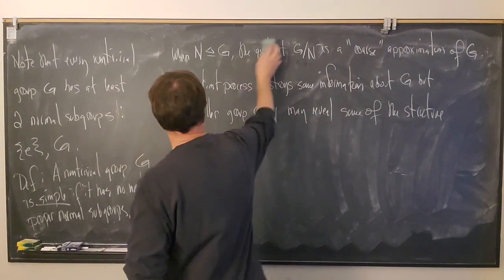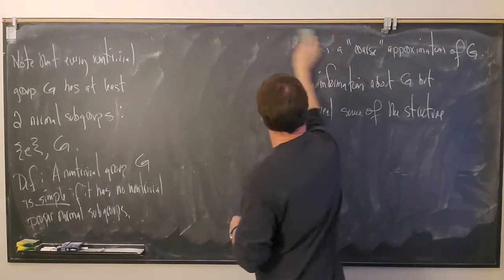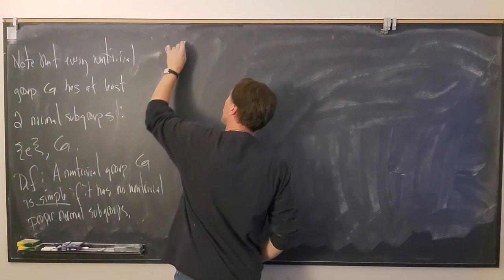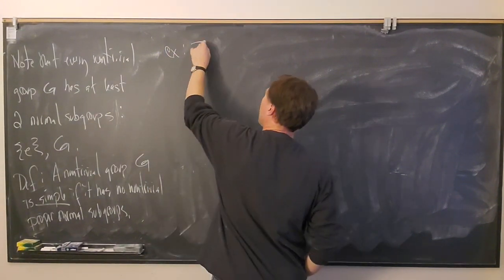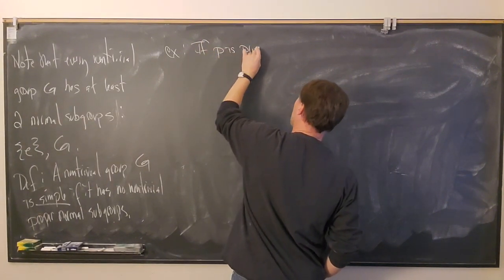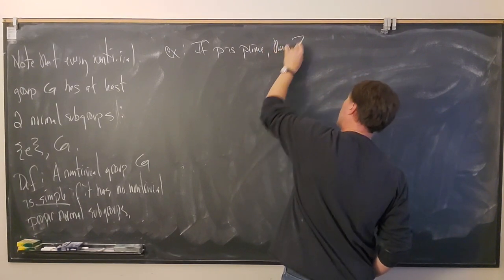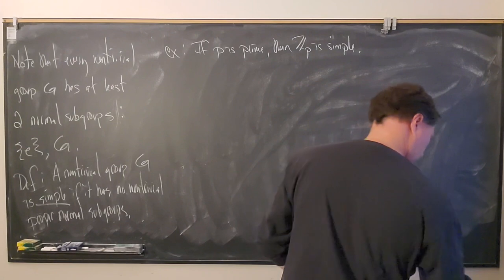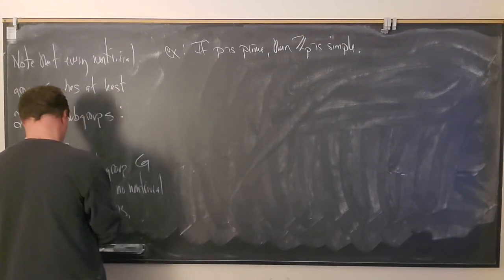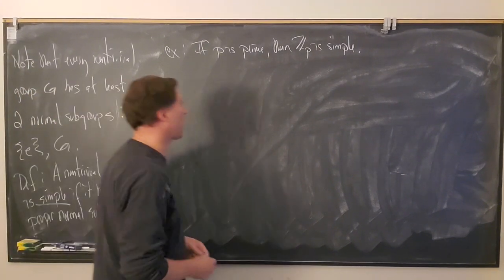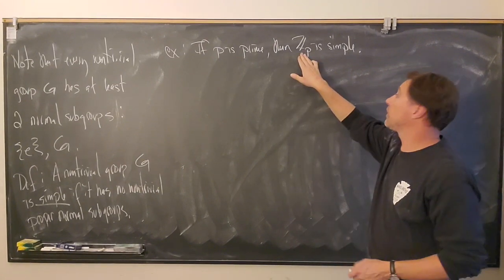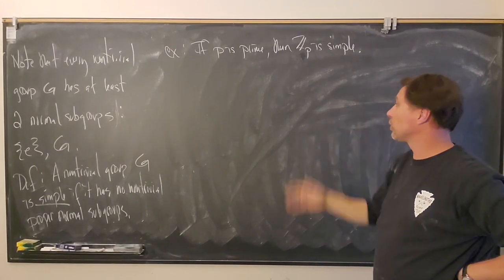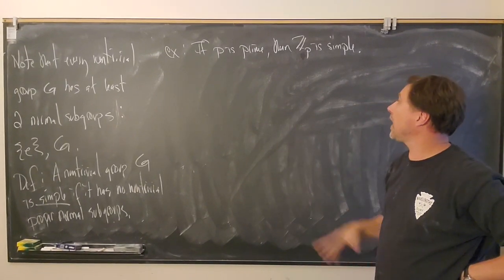For example, if p is prime, then Z_p is simple. This is basically a consequence of Lagrange's theorem. If you take any non-zero element of Z_p, it's a generator of Z_p. So the cyclic subgroup generated by any non-zero element equals all of Z_p, which means the only subgroups of Z_p are the zero subgroup and all of Z_p.